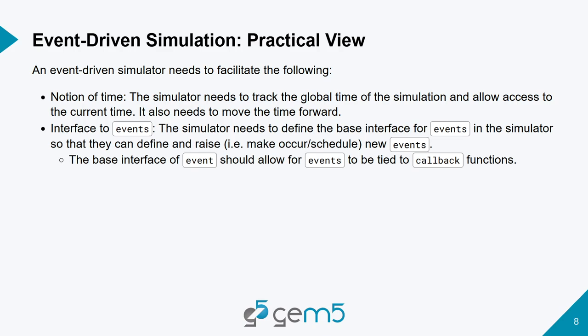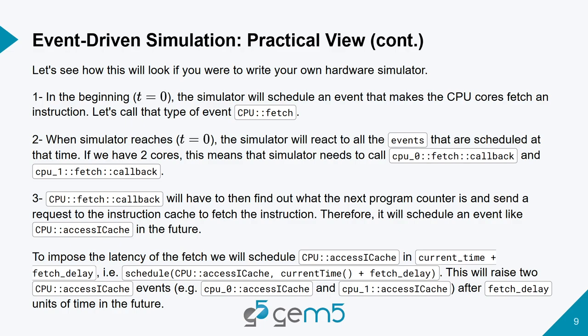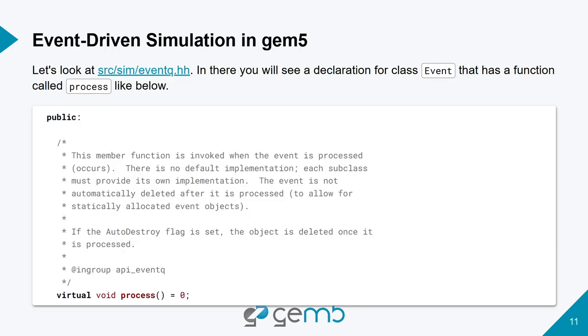The simulator needs to offer two things: an ocean of time (which Gem5 offers as TICs) and an interface to schedule and process events. If you look at the SimObject class, you'll see that it inherits from a class called EventManager. So a SimObject can tell the simulator to make an event happen at a specific time. The event class is defined under source/sim/event_queue.hh and has a pure virtual function called process, making it an abstract class. This is where you define the functionality that happens when that event is dequeued.